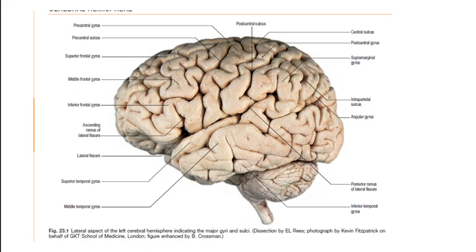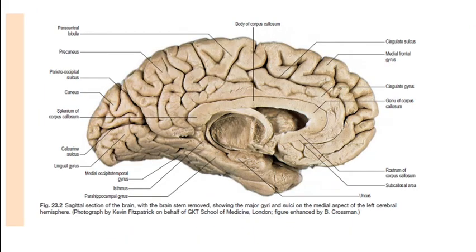Pause this video and revise these gyri and sulci. If you watch these pictures again and again, you will understand more each time. Looking again: uncus, parahippocampal gyrus — and when this fold is explored, you can see the ventricle.